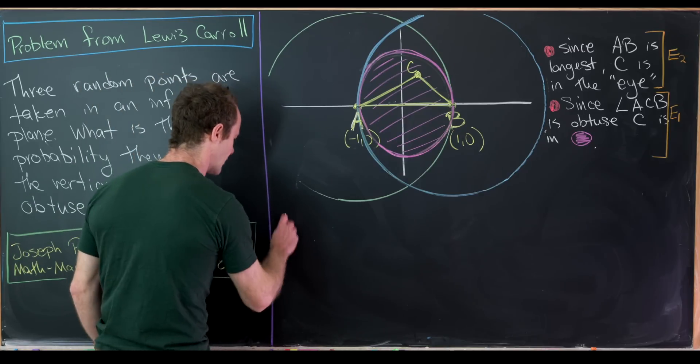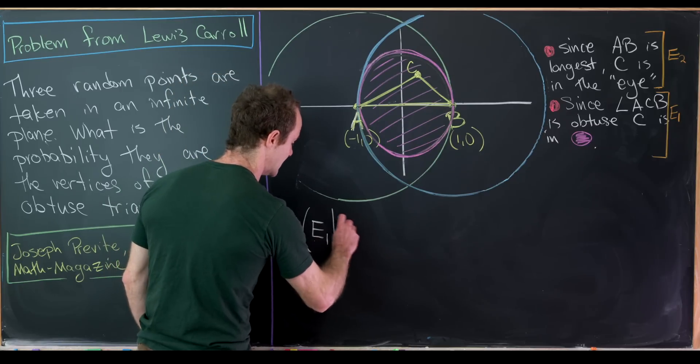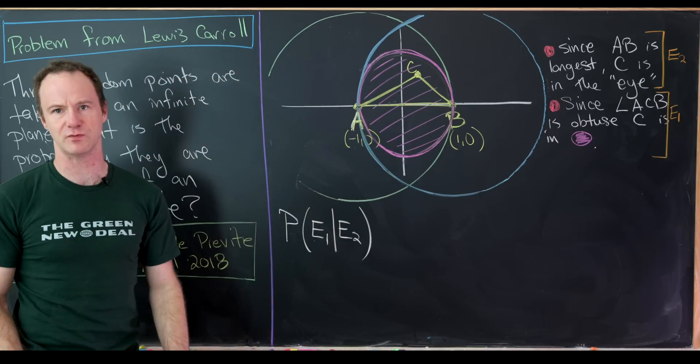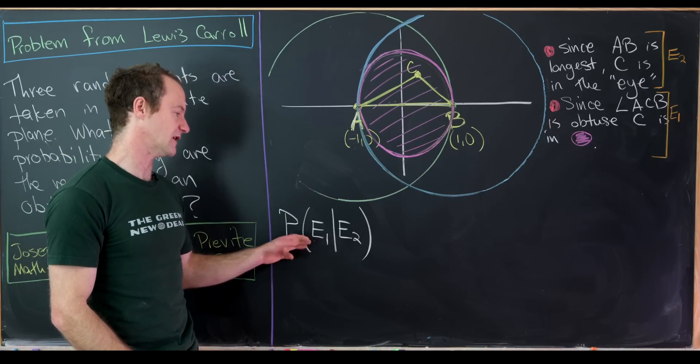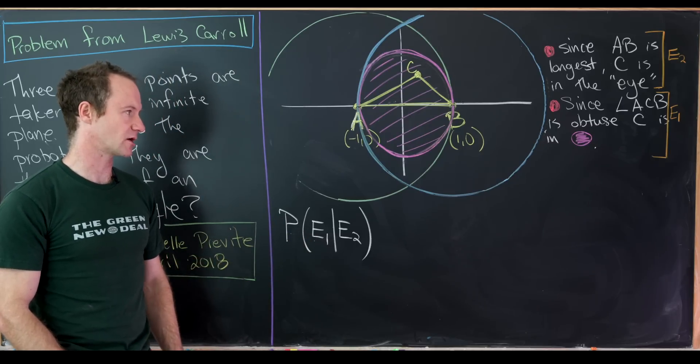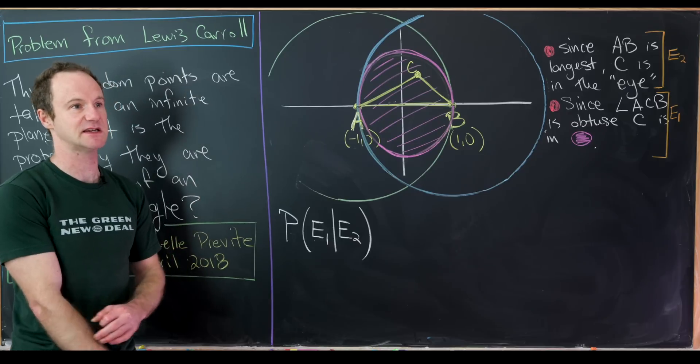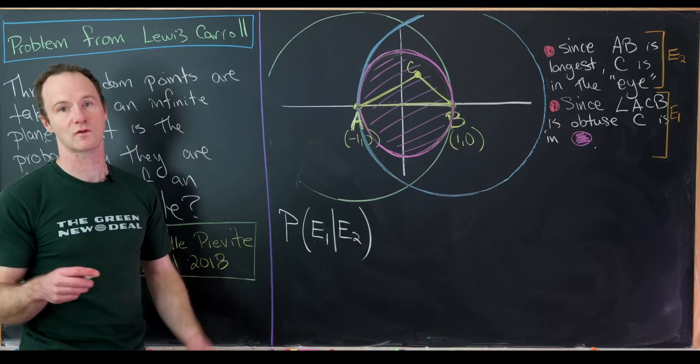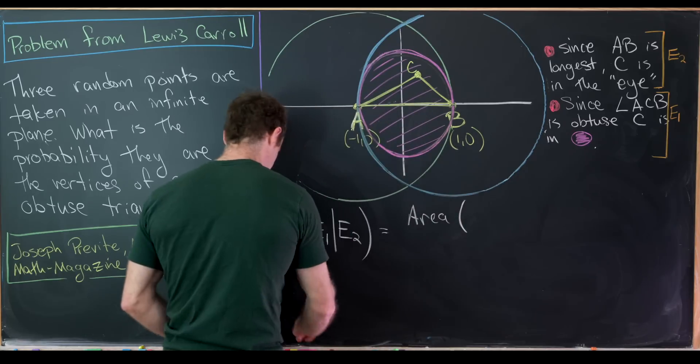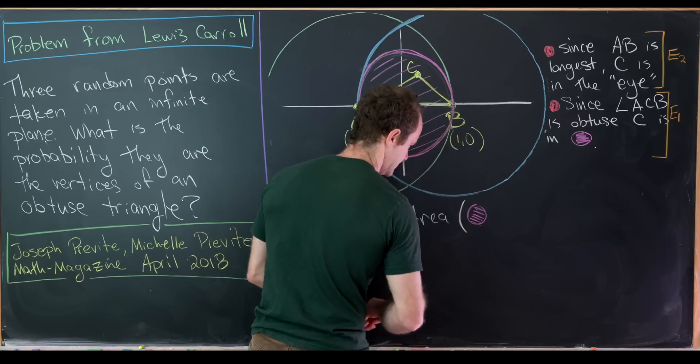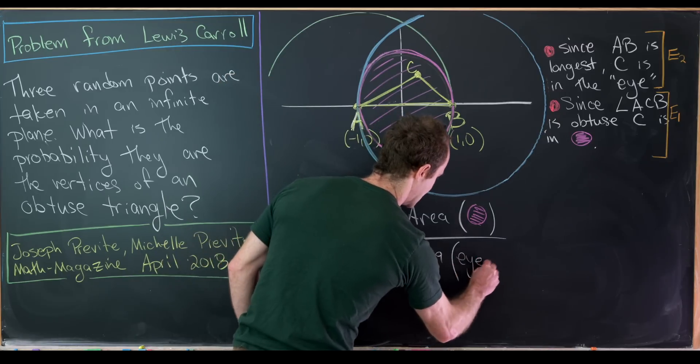And so in fact, what we're trying to calculate here is the probability that event E1 occurs given that event E2 occurs. So we're assuming that E2 occurs, and then we're going to find the probability that E1 occurs given that other event has already occurred. But since we can assume that it's equally likely for any of these points to be landed on by C, in fact, what we're really looking here for is a ratio of areas.